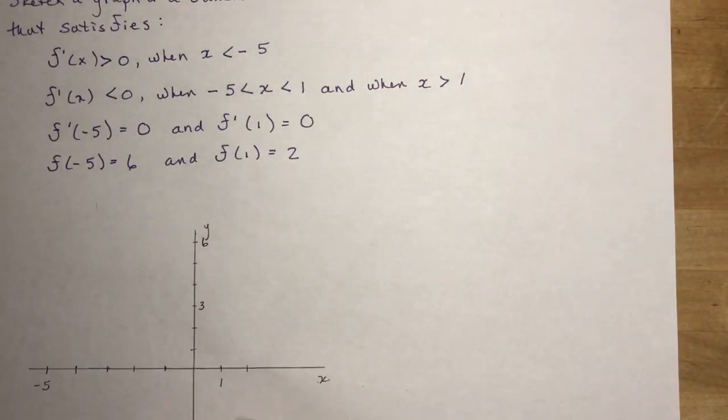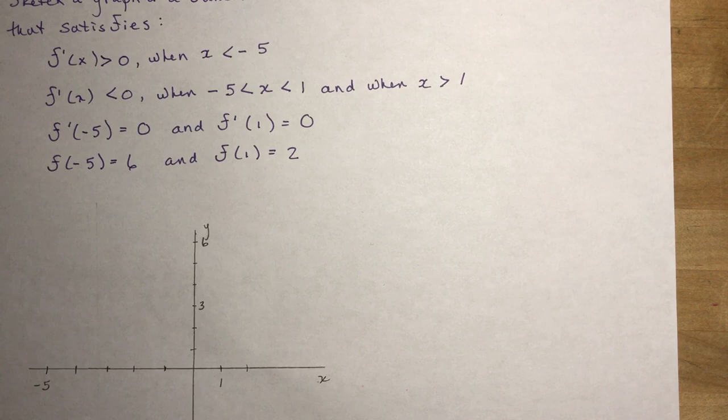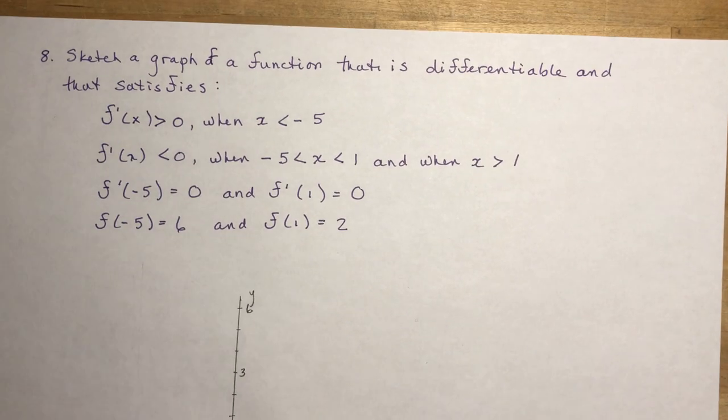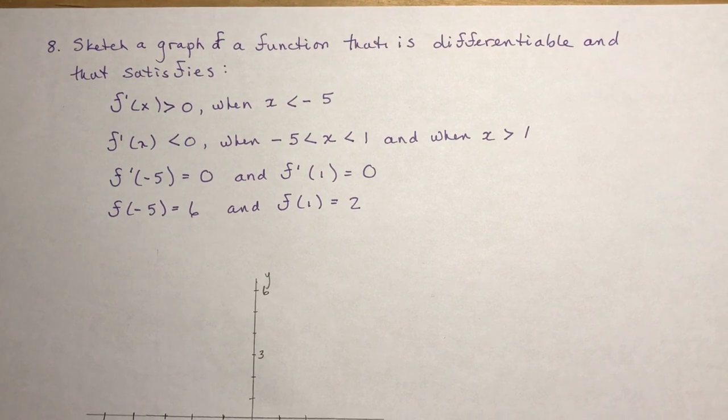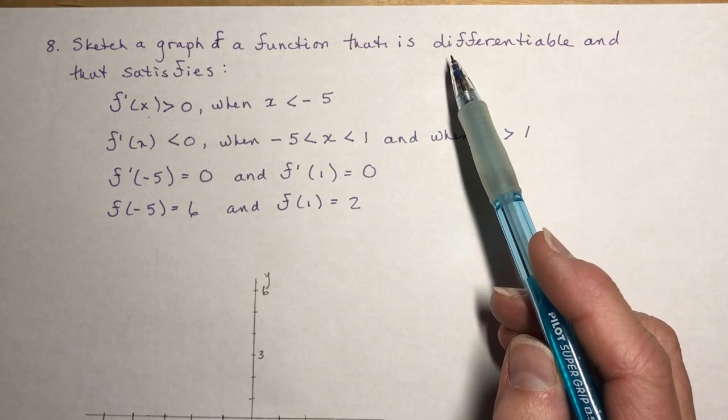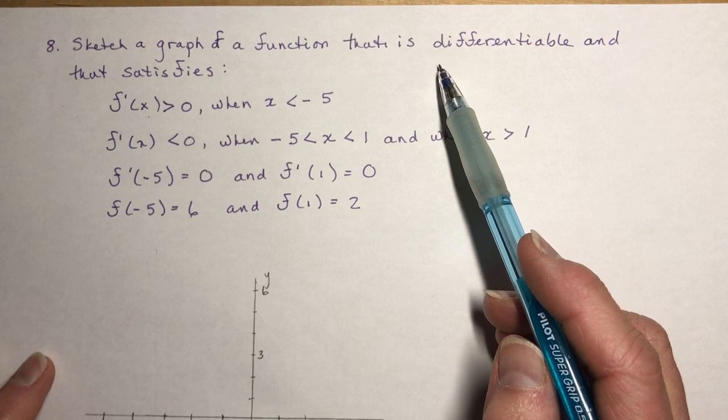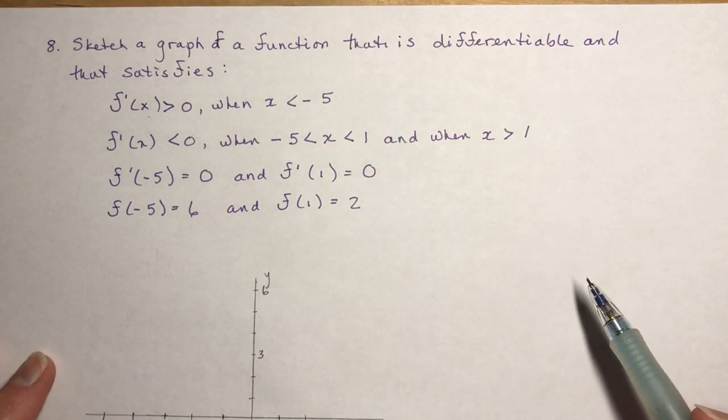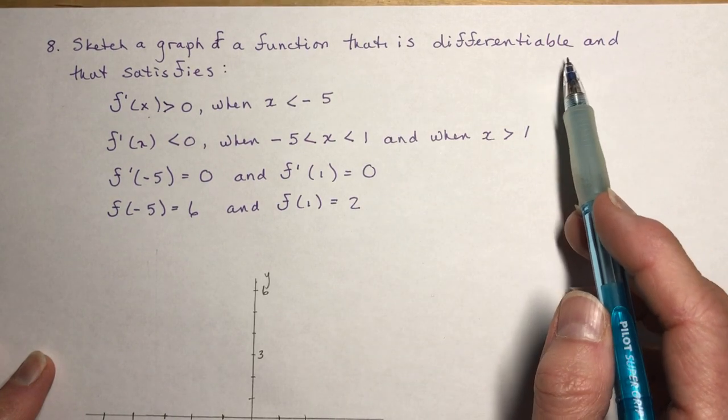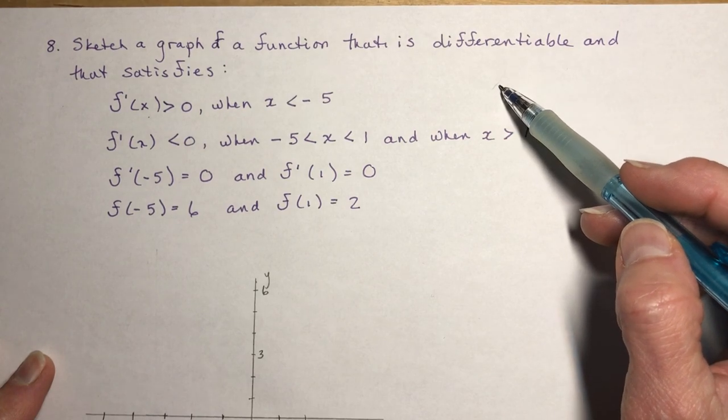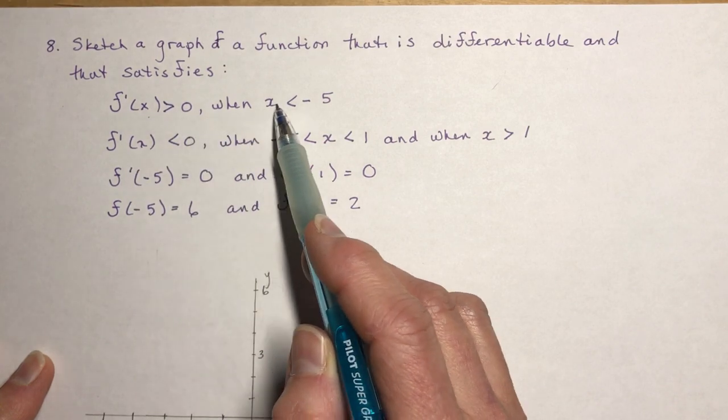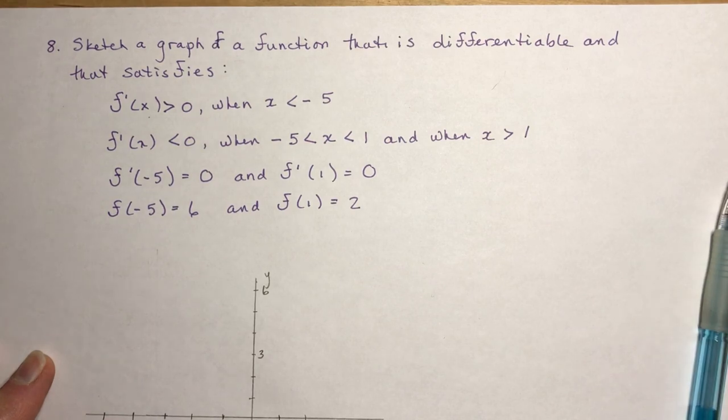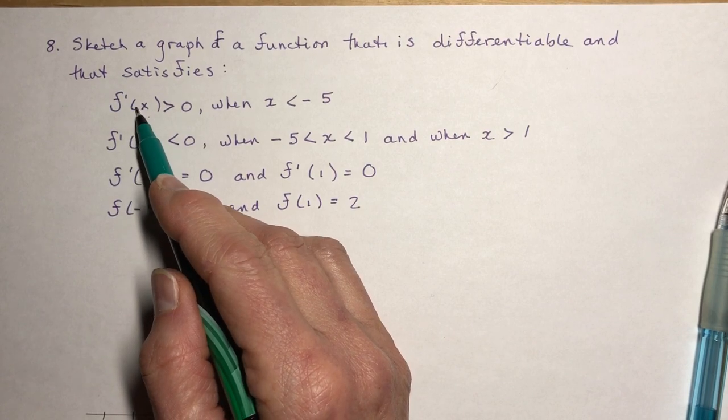The last question I want to do is a graphing question, and some students have trouble with this because they don't know where to begin as well. It's one of these questions that once you've seen it once, I'm pretty sure you're going to be able to do it on your own. It's sketch a graph of a function that is differentiable, so that means there's no cusps, there's no asymptotes. f'(x) > 0 when x < -5. Let's translate that into English. f'(x), so that's the slope, right? Slope is positive when x is less than -5.